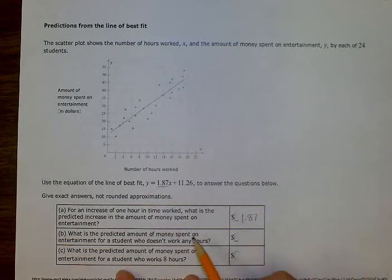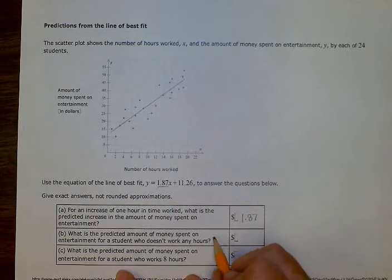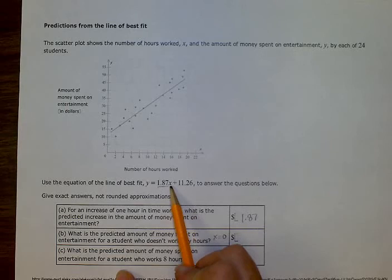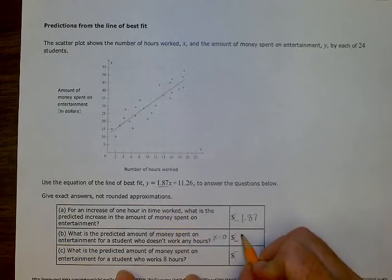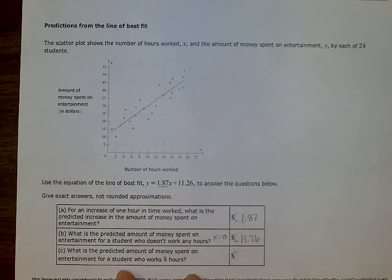So what is the predicted amount of money spent on entertainment for a student who doesn't work any hours? So if x was zero, right? This is what happens if x is zero. So if we put zero into this spot, 1.87 times zero is zero, and that would add 11.26. So our answer would be zero plus 11.26 makes $11.26. Okay, so this is the y-intercept answer.